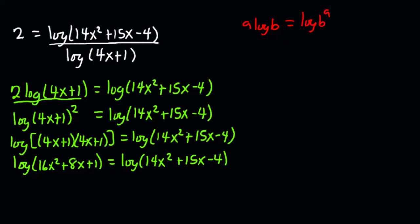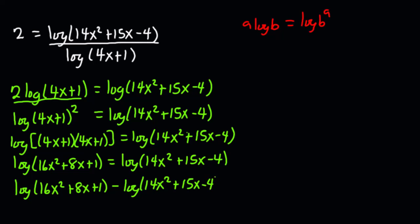What I'm going to do is send everything to the left hand side: log of (16x² + 8x + 1) minus log of (14x² + 15x − 4) equals 0. According to the property of logarithms, log A minus log B is the same as log of (A/B).